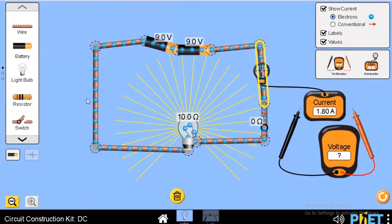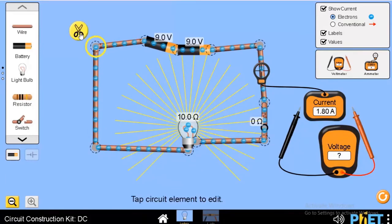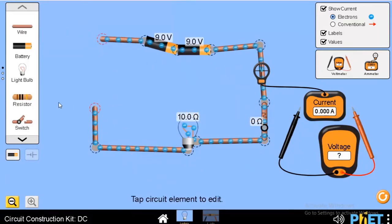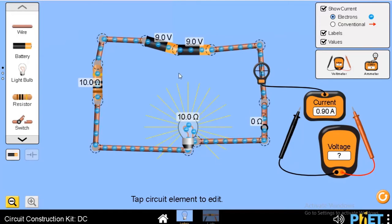Now what if we increased the resistance? Let's add resistance. As you can see, the light became dimmer because the rate of travel of current is less, and the current was halved.